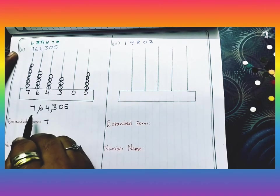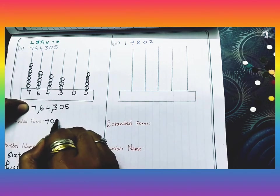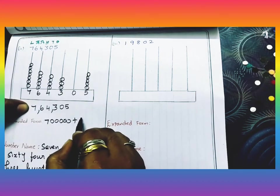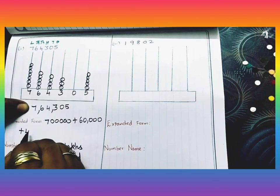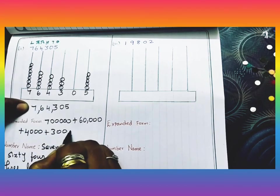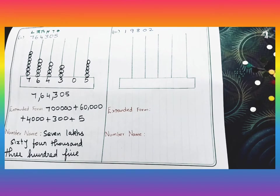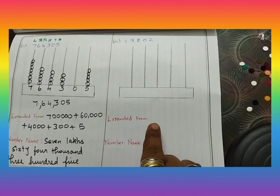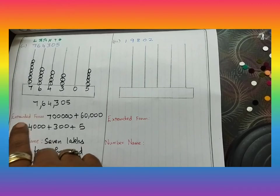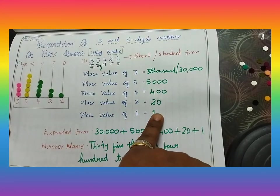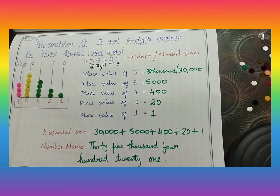For the expanded form: seven lakhs is a six-digit number so it has five zeros. Sixty thousand has four zeros. Then plus four thousand, plus three hundred, plus five. Write the expanded form and number name like this. For the third example, stick the bindis on your own. For the second and third sums, you can directly write the expanded form and number name without writing the place values separately. Thank you.